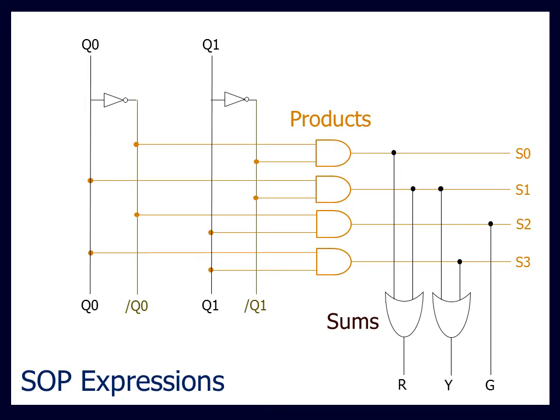Each AND gate produces a product term, which are then combined using an OR gate to produce the final output. From what we've seen in previous videos, you might observe that each product term is in fact a minterm.